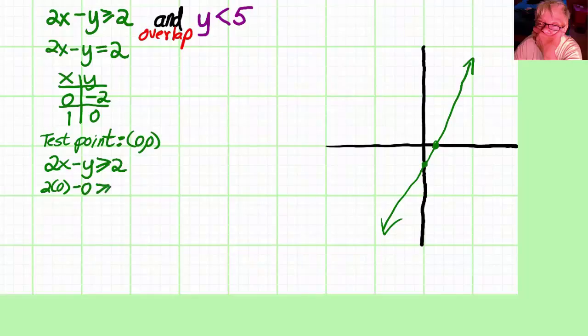By putting the x coordinate of the test point in for x and the y coordinate of the test point in for y, I get a false answer. Zero is greater than or equal to 2 - that's not true.